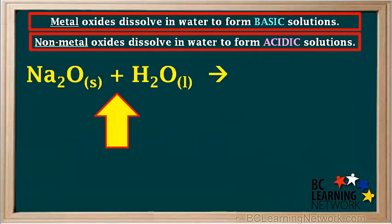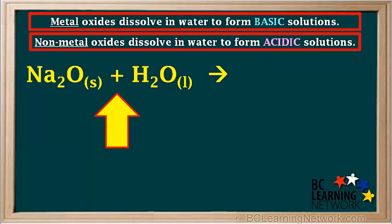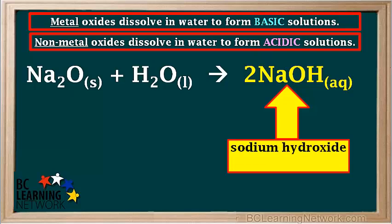When the metal oxide sodium oxide, Na₂O, dissolves in water, it reacts with water to form NaOH, or sodium hydroxide, which is a base. The coefficient two in front of NaOH is there to balance the equation.